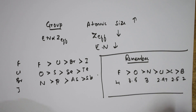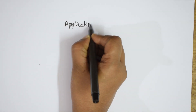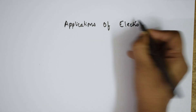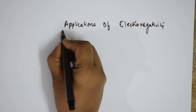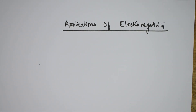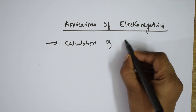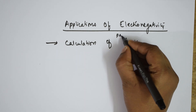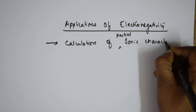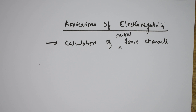Let us now look at the applications of electronegativity. First, electronegativity can be used for calculating partial ionic character — whichever atom is maximum electronegative will try to drag electrons. This calculation depends upon the electronegativity difference and also on the dipole moment of the compound.